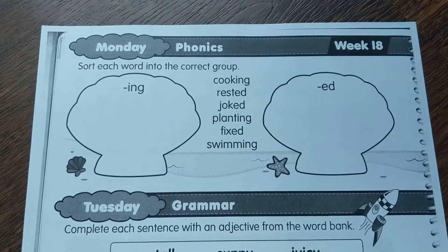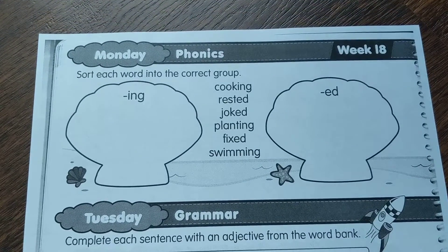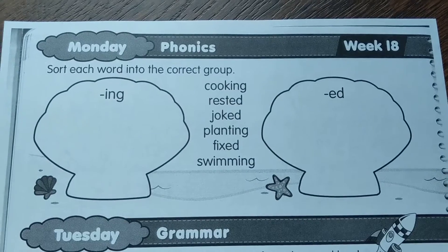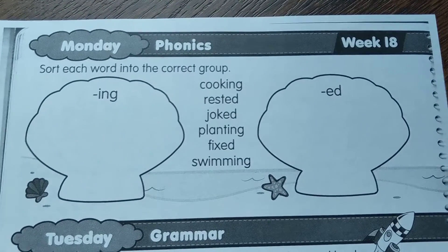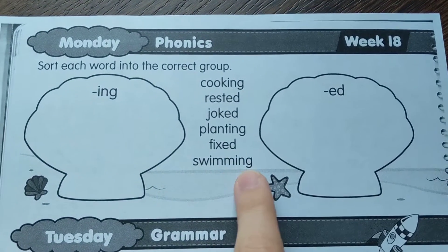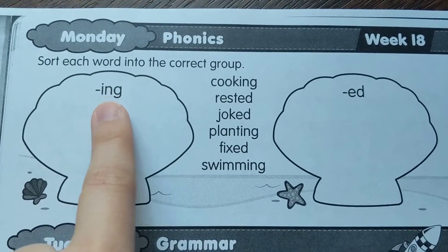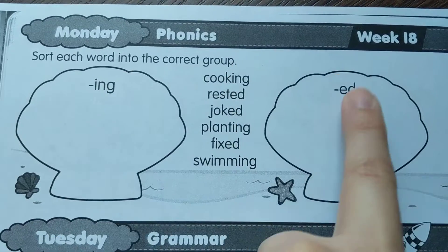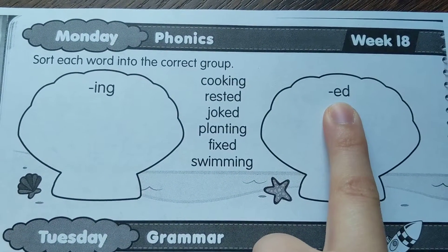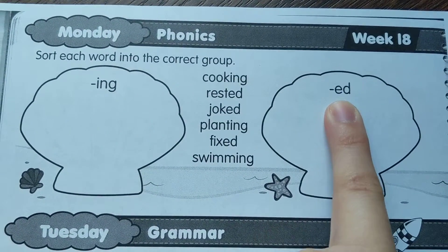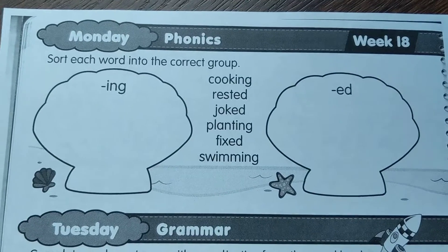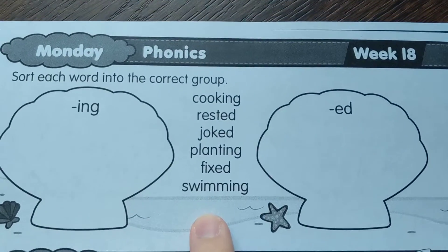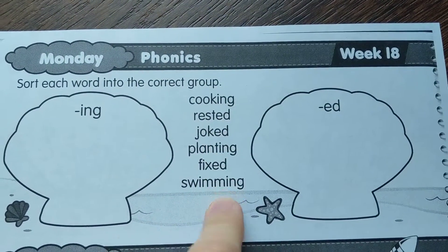This is your ABC paper for week number 25. For the first section, we're going to sort each word into the correct group. I have two suffixes here: one that says -ing and one that says -ed, either T, D, or ID. You're going to write the words in the correct shell depending on what their suffix is.